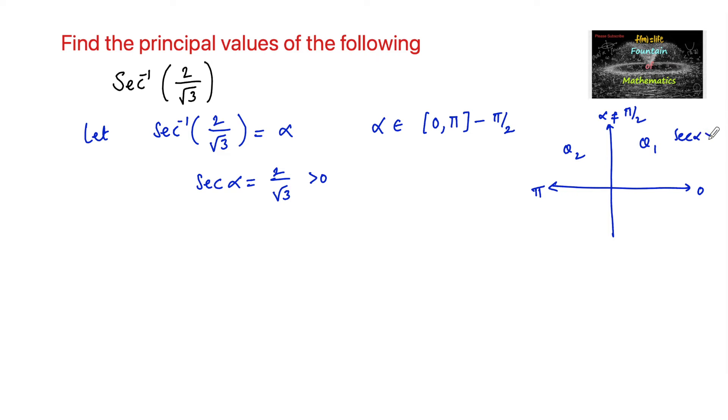We shall consider secant alpha positive in the first quadrant, and we know that secant 30 degrees, that is secant π by 6, is 2 by root 3.